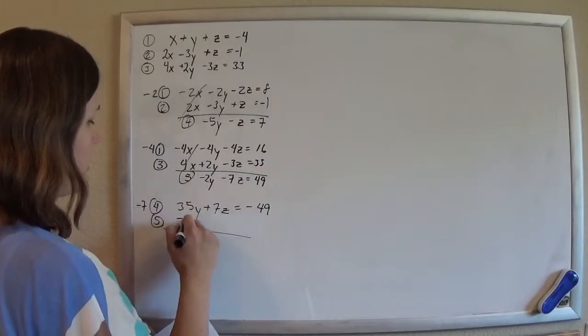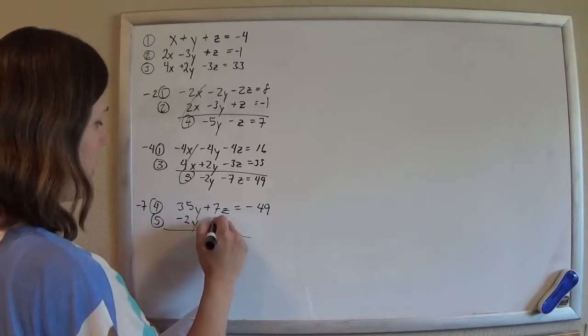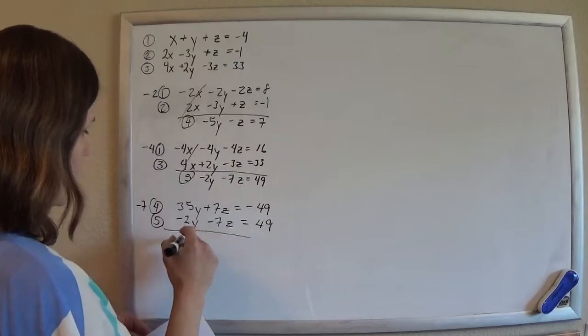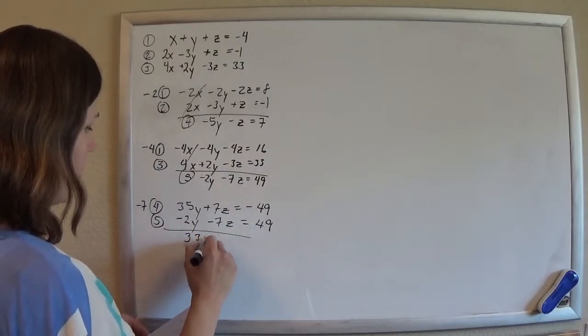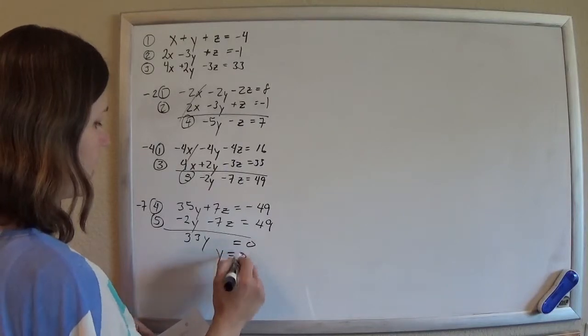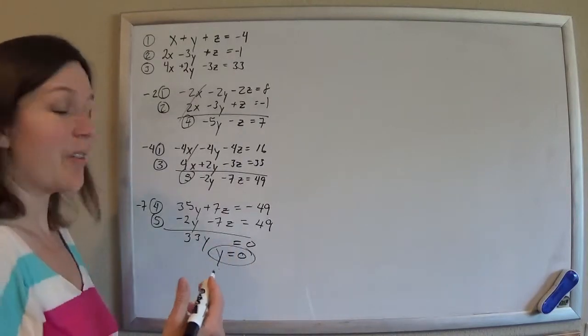And then this one just stays put, minus 2y minus 7z equals 49. And so I get 33y equals 0. So y is 0. Hey, I got one. Excellent.